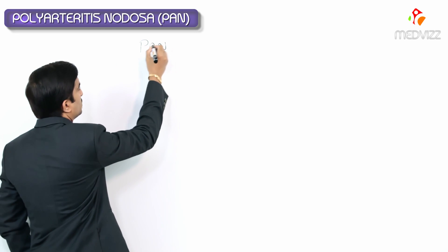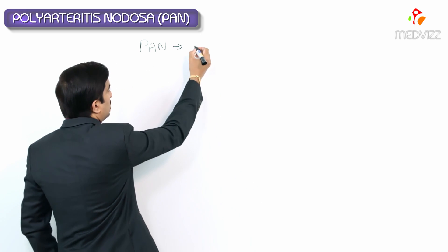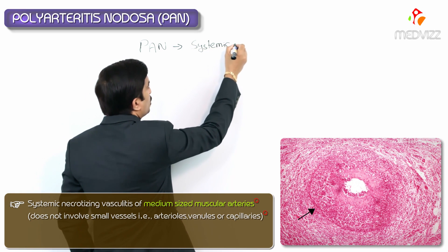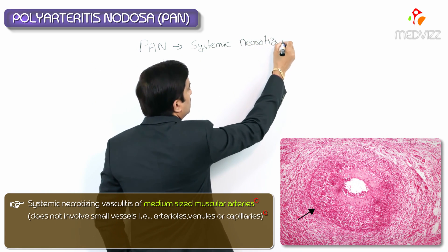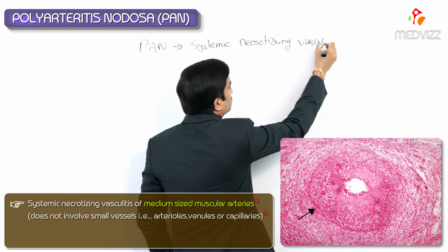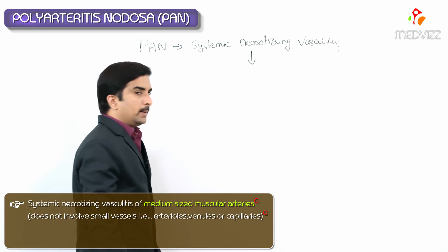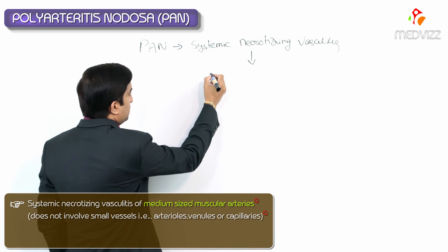In the topic of medium vessel vasculitis, we are discussing Polyarteritis Nodosa, also called classical Polyarteritis Nodosa, abbreviated as PAN. It is a systemic necrotizing vasculitis of medium-sized muscular arteries.